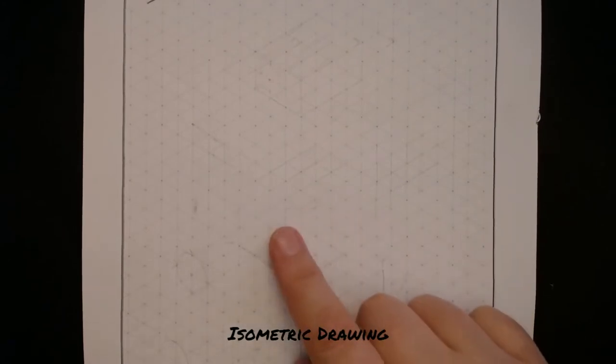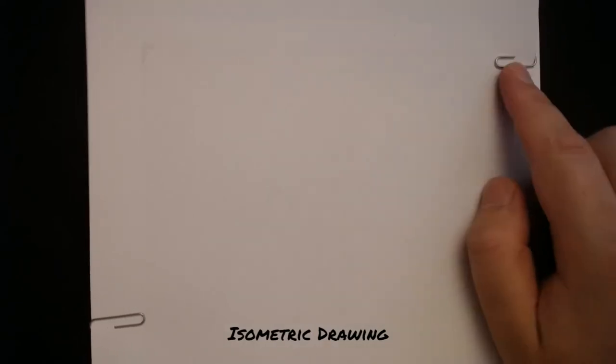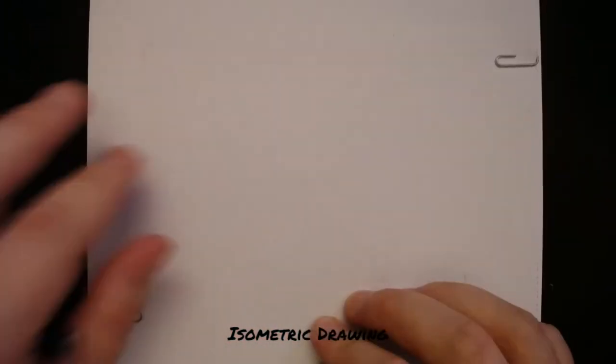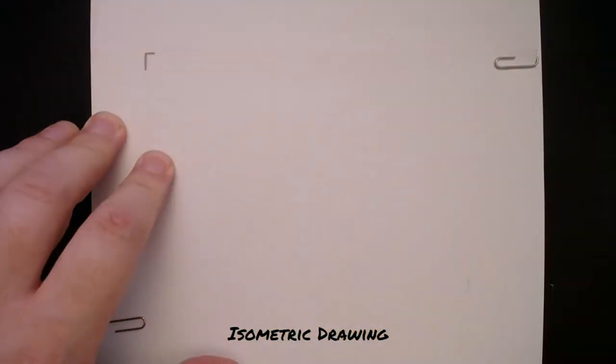What we want to do is place our piece of isometric paper behind another sheet of plain paper. It's a good idea to secure this with a couple of paper clips, and this will keep your isometric paper from moving around. You can even make a couple of marks for where the corners are to help locate it if it ever does move.